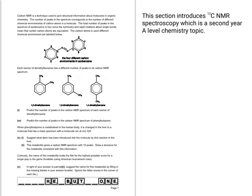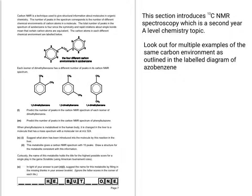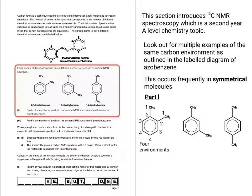So this section introduces carbon-13 NMR spectroscopy. The thing to be careful of here is the multiple examples of the same carbon environment as outlined in the labelled diagram of azobenzene. This occurs quite a lot in symmetrical molecules. So starting you off on how I've worked out there are four environments and therefore four peaks. It shouldn't be too difficult to work out how many peaks are on the others. Using the symmetry idea.